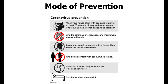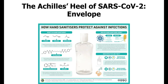Prevention includes social distancing, washing hands, covering your mouth, coughing into your elbow, avoiding others, and cleaning surfaces. Importantly, the Achilles heel of SARS-CoV-2 is its envelope. Alcohol and detergent disrupt the lipid bilayer, destroying the proteins necessary for the virus to connect to a host cell. As long as the alcohol content is over 60%, it will destroy the envelope and prevent infection.